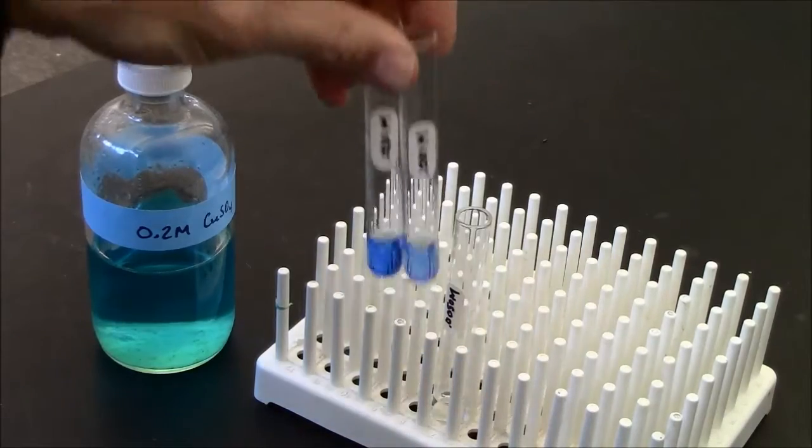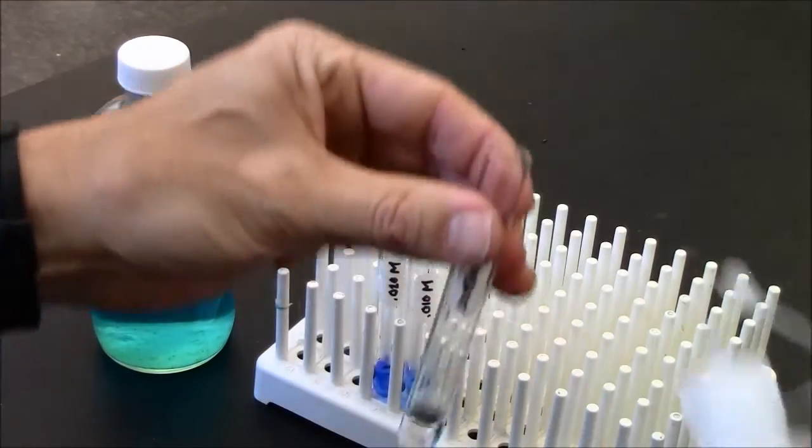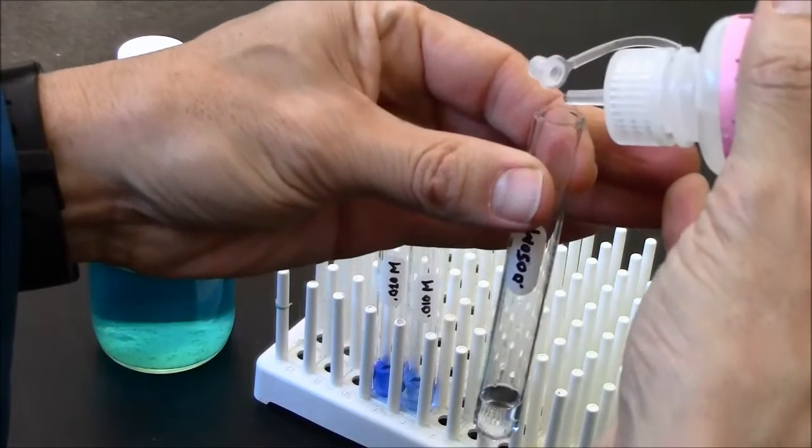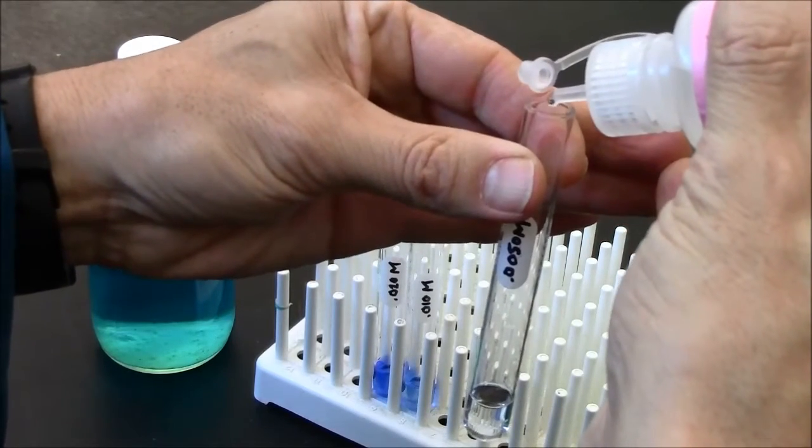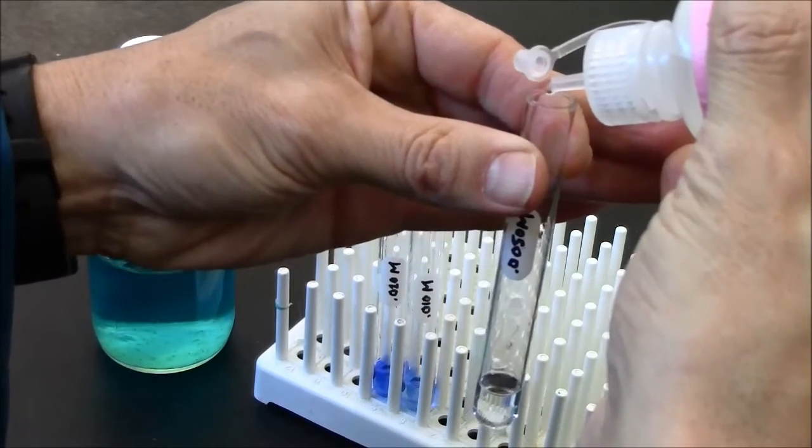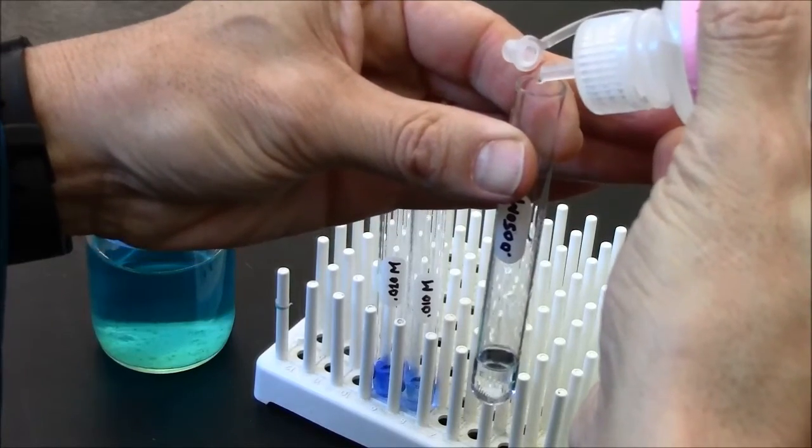So this is a test you can use. You can use ammonia to determine whether your solution, which may appear colorless, in fact does contain copper ions.